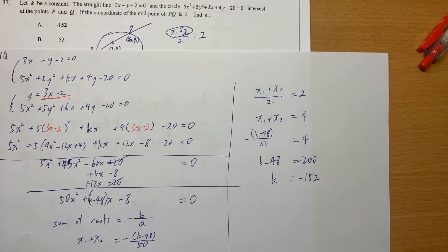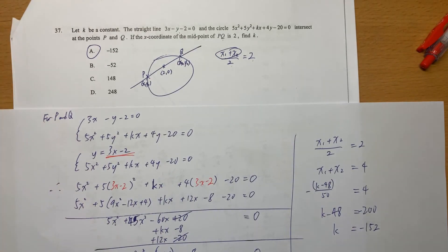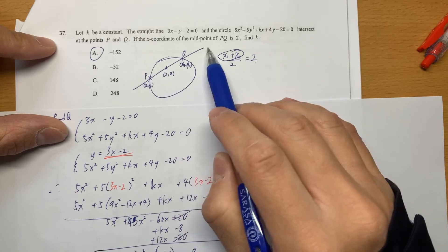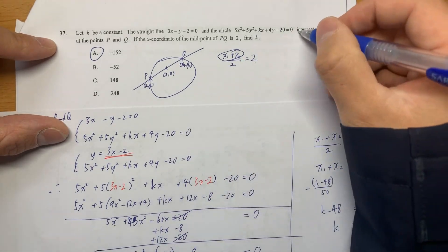So we find that k should equal negative 152 and the answer should be A here. So recap again. Whenever they tell you that there is a straight line, a circle, they ask you about the intercept point.